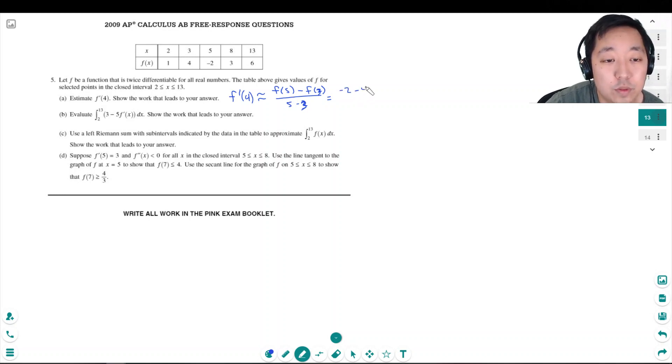That's negative 2 minus 4, those are the y values, over 5 minus 3. That's negative 6 over 2. It's negative 3.